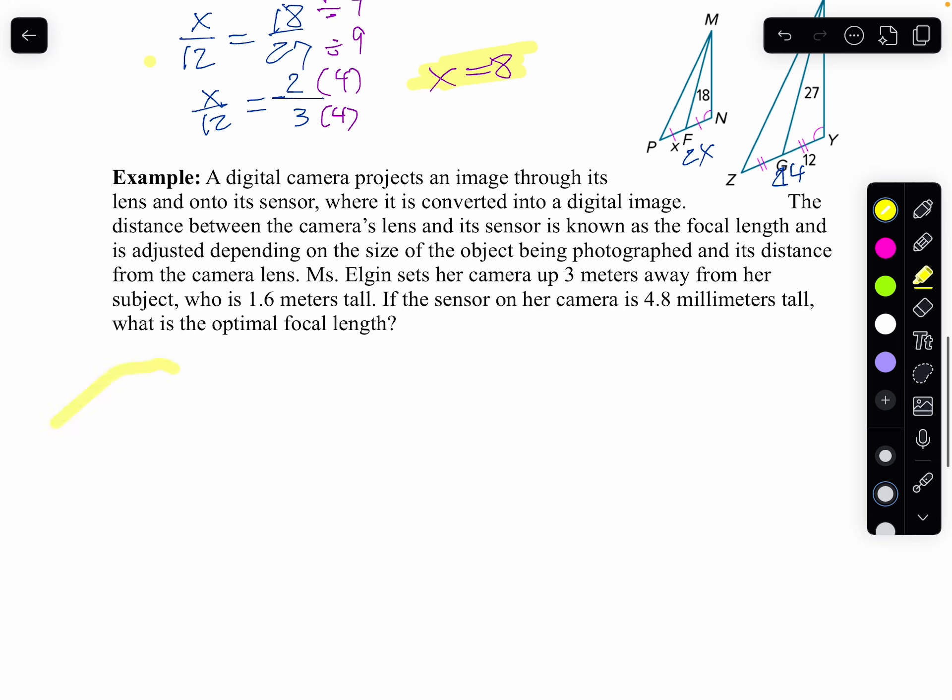Here's a design question. I've got a digital camera projects an image through its lens onto a sensor, which is converted into a digital image. The distance between the camera's lens and sensor is known as the focal length. It is adjusted depending on the size of the object being photographed and the distance from the camera. Focal length is kind of like your altitude. Not kind of like it. It is the altitude. Mrs. Elgin sets up her camera 3 meters away from her subject who is 1.6 meters tall. If the sensor in her camera is 4.8 millimeters tall, what's the focal length?